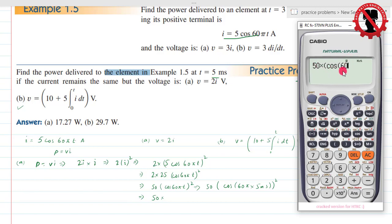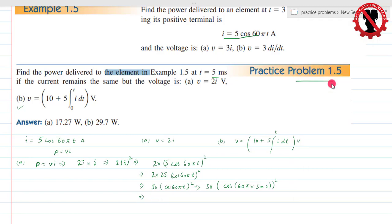So 50 into cos of 60 shift pi, 60 pi into time value 5 milliseconds, so 5 exponential power minus 3, and the whole thing squared. So the power value comes out to 17.27 watts. 17.27 watts. So this is your power for case number one.